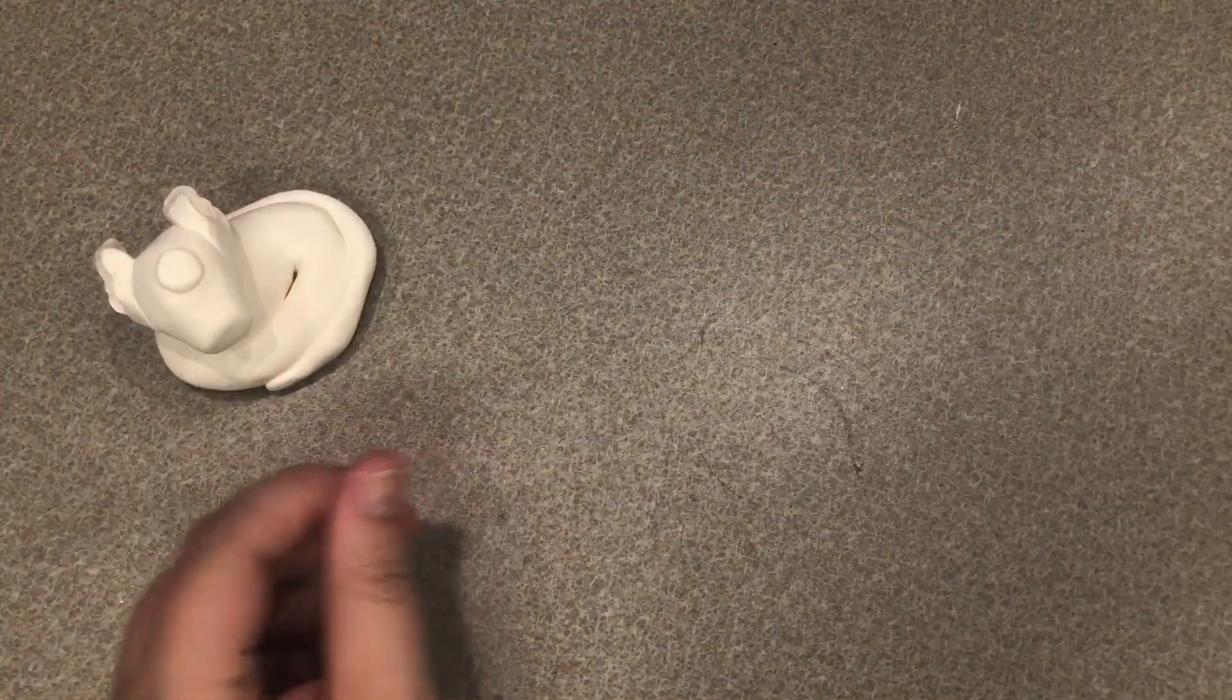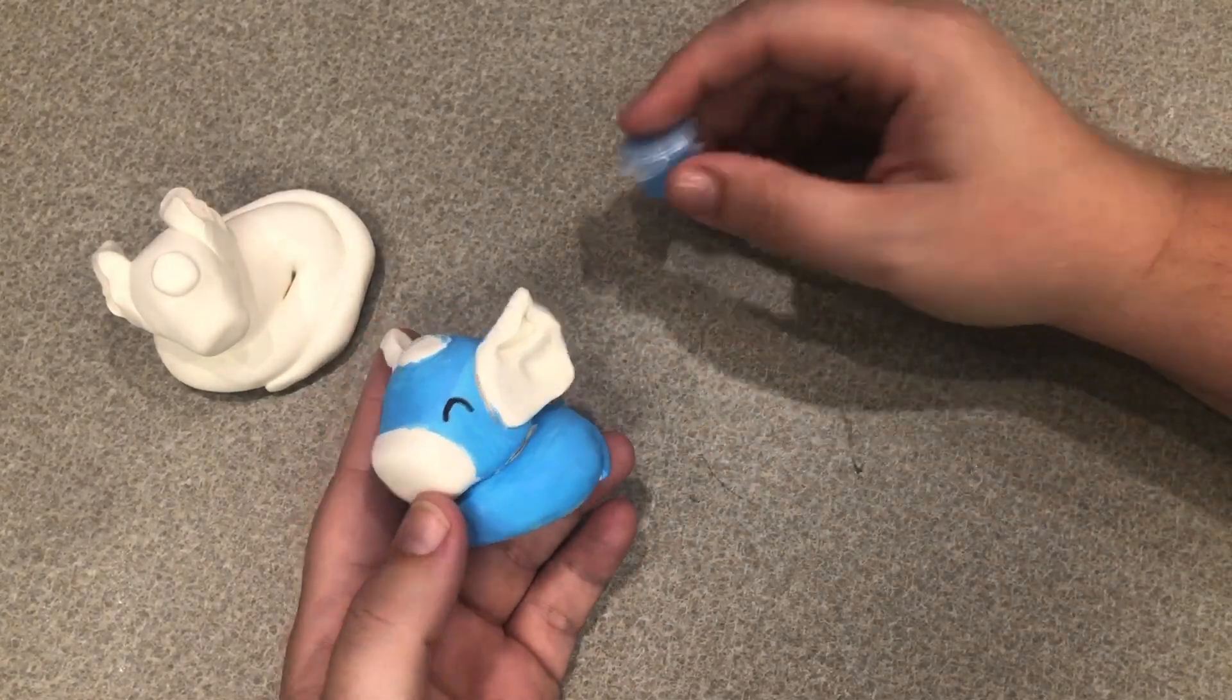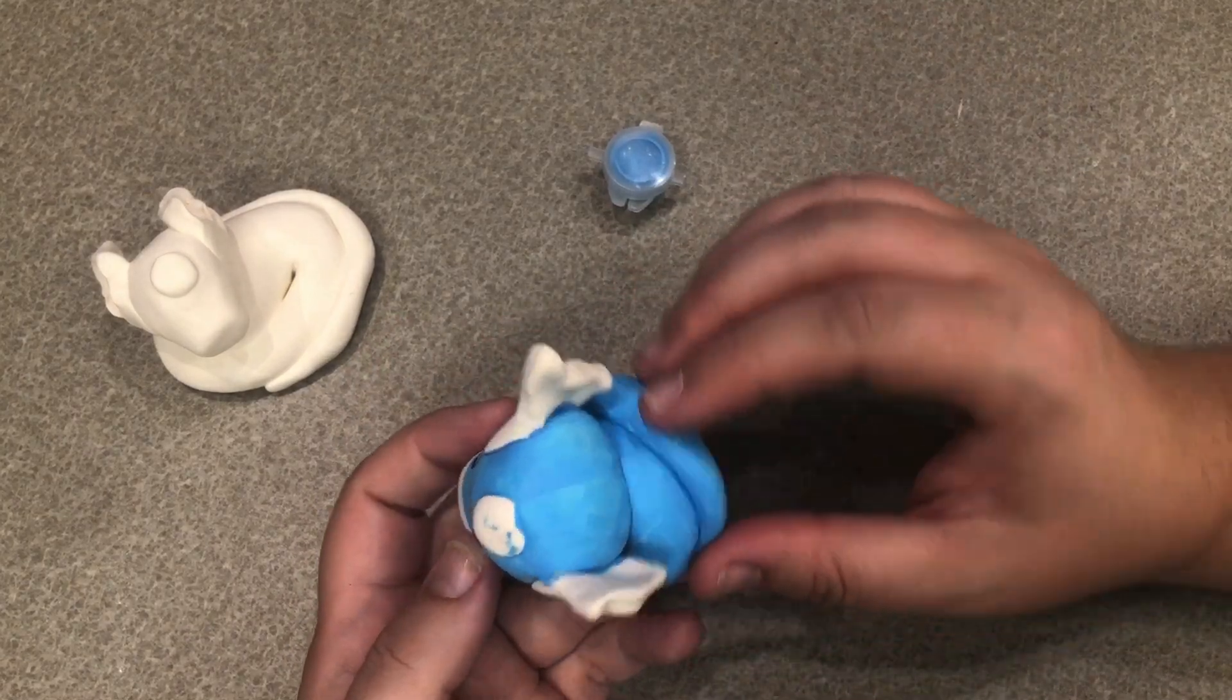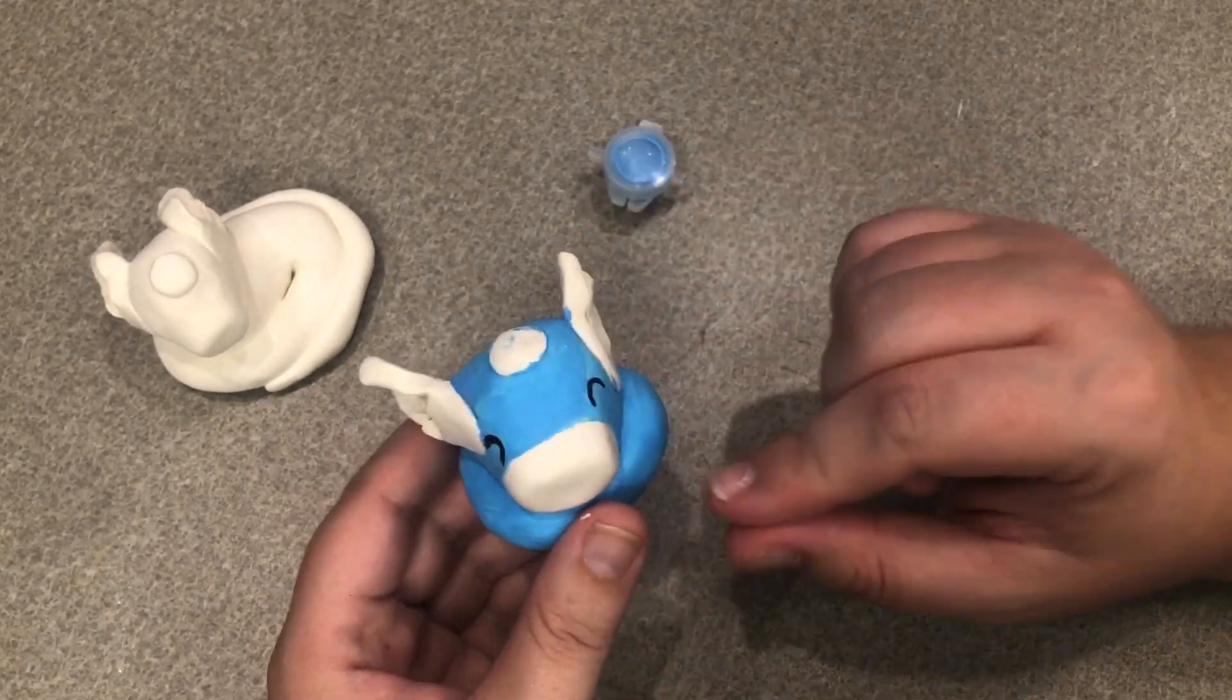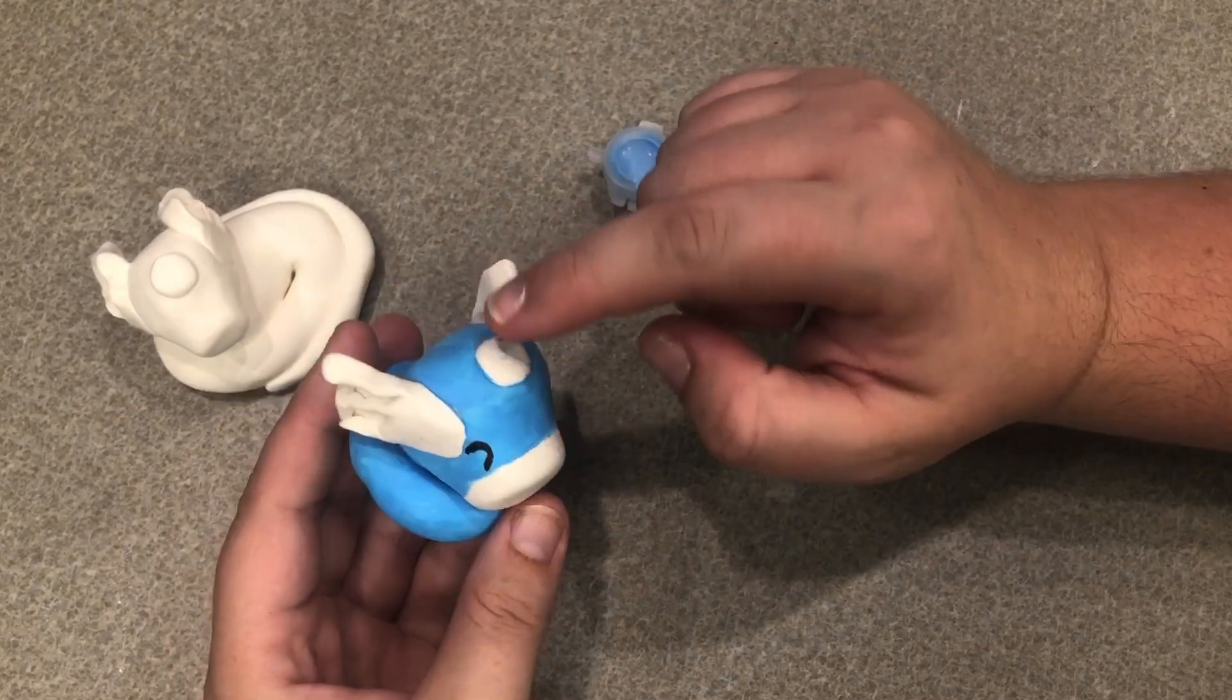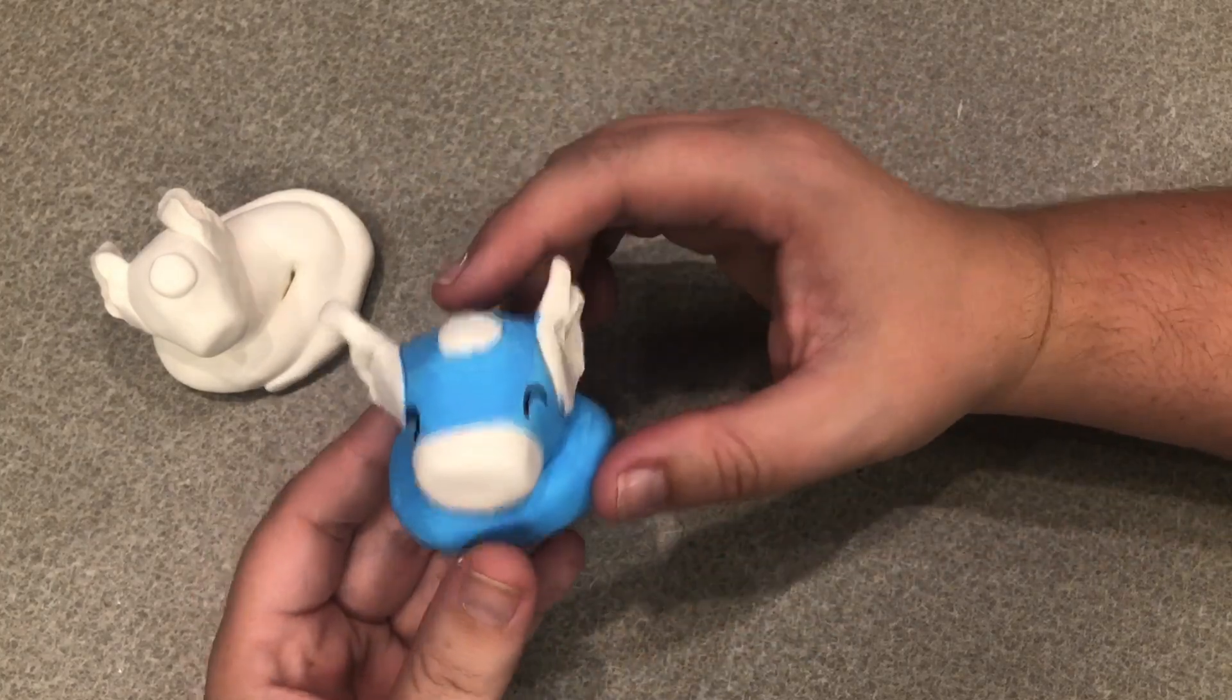But then once it is dry then you can take the blue paint from your packet and just go ahead and paint all around the top of the body and leave the bottom white. And then we're going to leave the ears white, the little snout white, and the little dot on top of his head white. But just paint the rest blue.